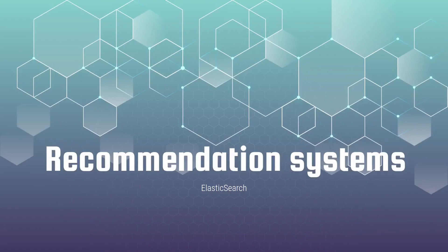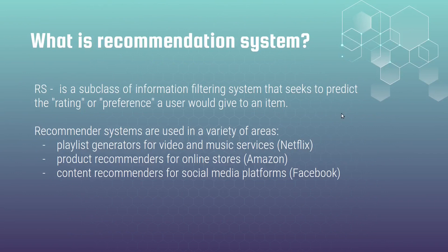Hi, I'm glad to see you at this section. We are going to speak about recommendation systems here and we will start from theory as always. So what does it mean at all? A recommendation system is a subclass of information filtering system that seeks to predict the rating or preference a user would give to an item. Recommender systems are used in a variety of areas and here are some examples.